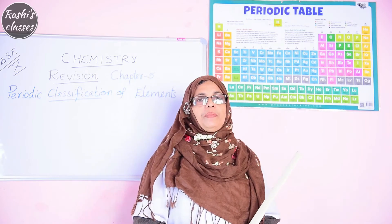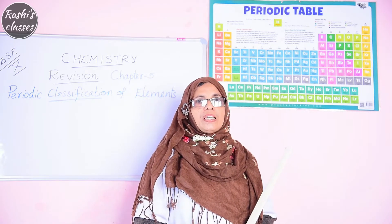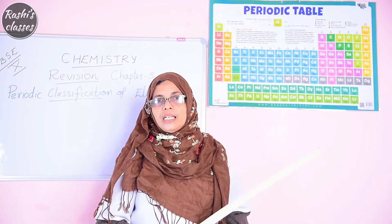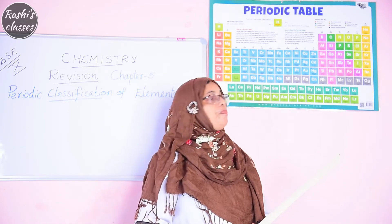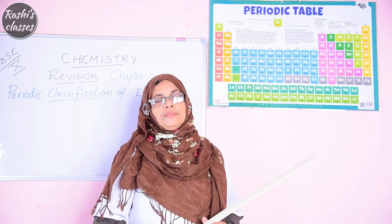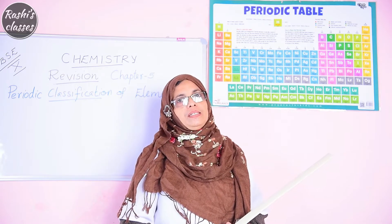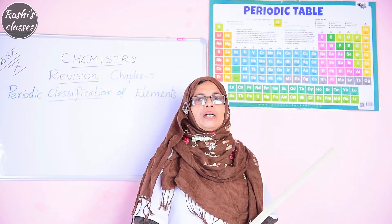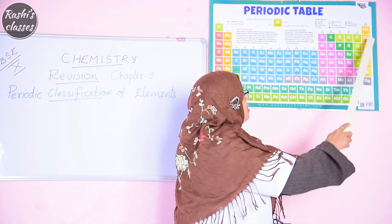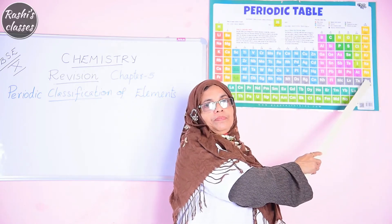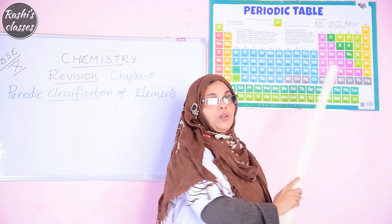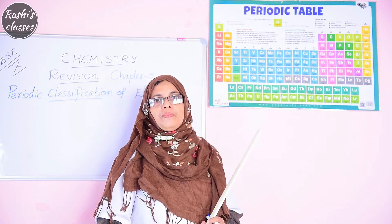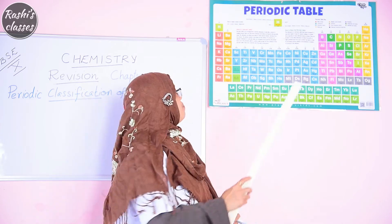The nitrogen family consists of nitrogen, phosphorus, arsenic, antimony, and bismuth. The oxygen family consists of oxygen, sulfur, selenium, tellurium, and polonium. Then halogens: fluorine, chlorine, bromine, iodine, and astatine. The 18th group is called noble gases: helium, neon, argon, krypton, xenon, and radon — and Oganesson is also added. All these group members show similarity in their properties.